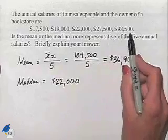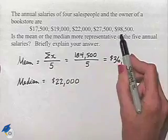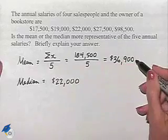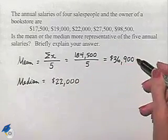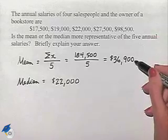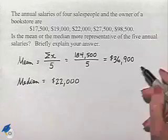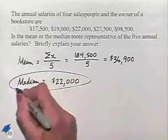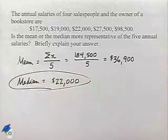We only have one that's above that, and it's significantly above that. When we use that value in the mean, because of its significant difference, it really raises the mean higher than is representative. So in this problem, the median is more representative of these salaries.